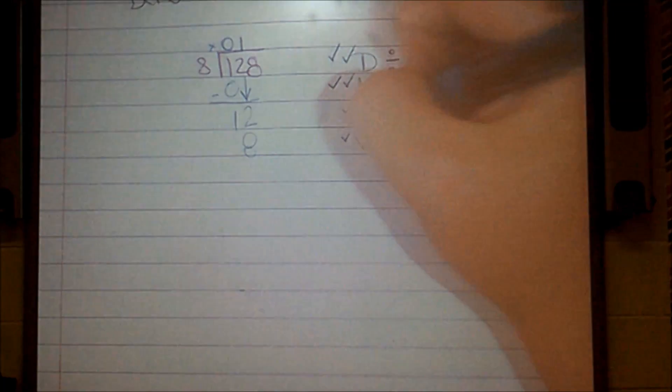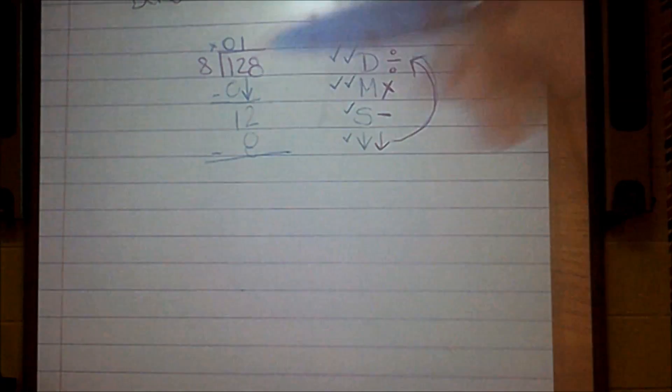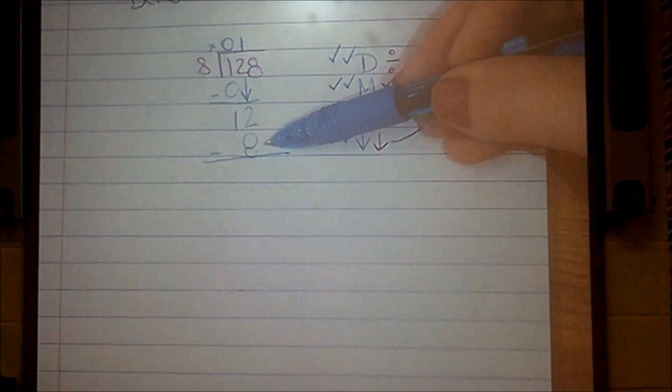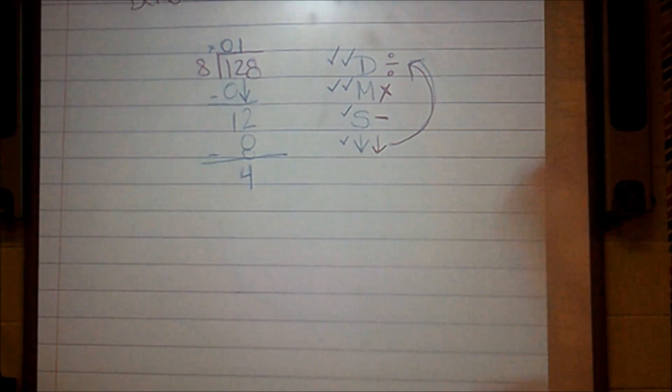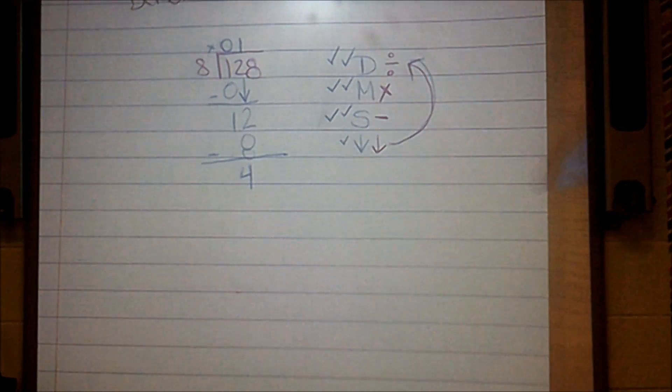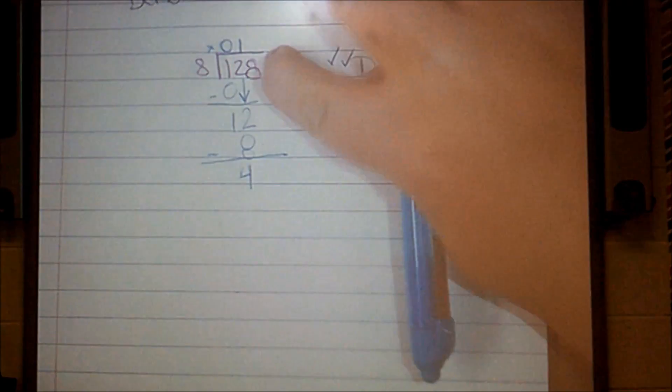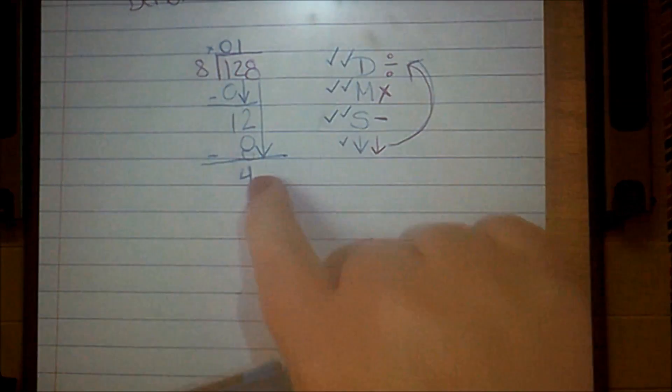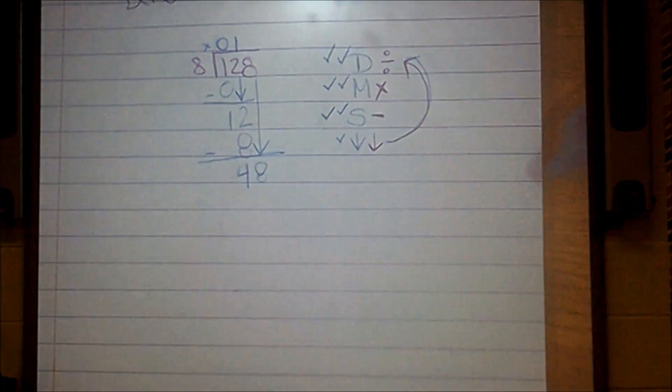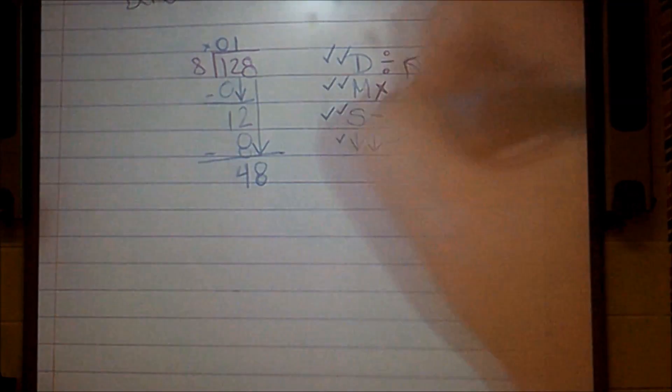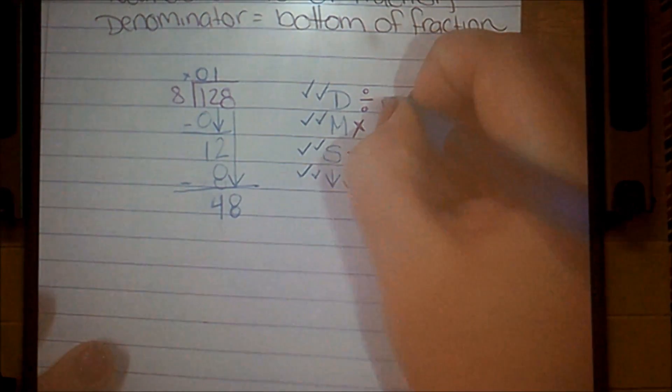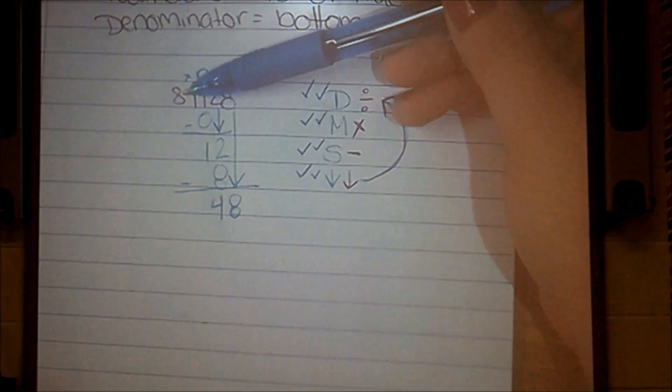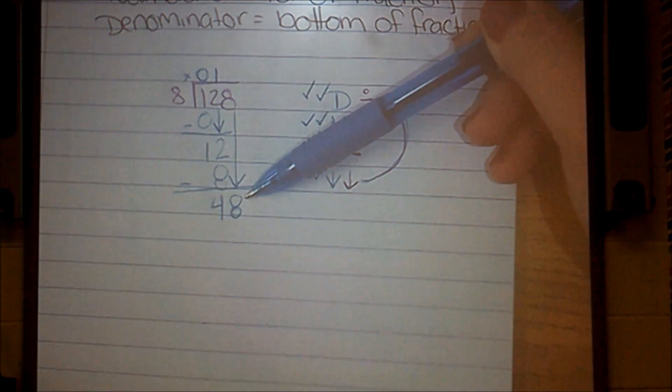Check it off my list. Go on down. My next step is to subtract. I'm going to subtract the 12 that I have from my 8. 12 minus 8 is 4. Check it off my list. Go down to the next step. And I'm going to bring down the next digit under my cave. I'm going to bring it all the way down to live with that 4. So now I have a 48 there. After I bring it down, I'm going to go all the way back up to the divide. And I'm going to say, 8 can go into 48 how many times without going over?